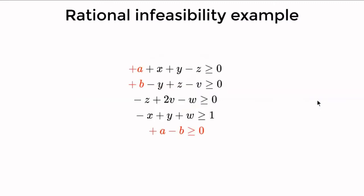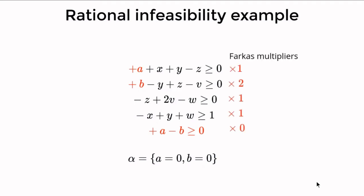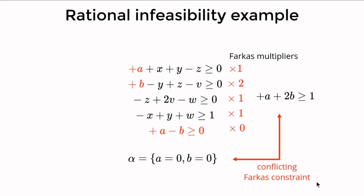Let's apply this to a slightly extended example. We introduce variables a and b and a fifth constraint stating a is at least as great as b. Suppose the solver decides a to be zero and propagates b to zero. The reduced problem is now rationally infeasible. Running an LP solver will detect this and returns Farkas multipliers, which together define the Farkas constraint — falsified by the partial assignment — so conflict-driven search can continue by learning a new constraint.